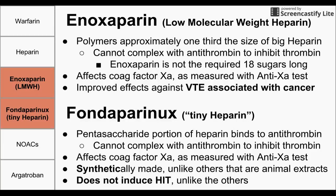Next we have two smaller versions of heparin. The first is low molecular weight heparin, also called enoxaparin. This is a polymer about one-third the size of heparin, and it cannot complex with antithrombin — it's not the 18 sugars long required to form the hug between antithrombin and thrombin. So enoxaparin works to inhibit factor Xa but does not work to inhibit thrombin. You can measure enoxaparin effectiveness with the anti-Xa test. Enoxaparin is particularly used when you have an embolism associated with cancer, which puts you at high risk for DVT or PE.